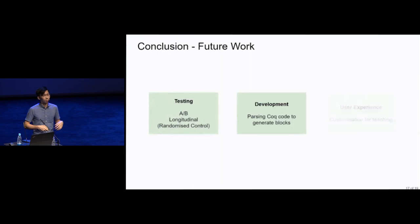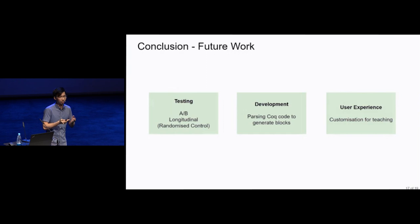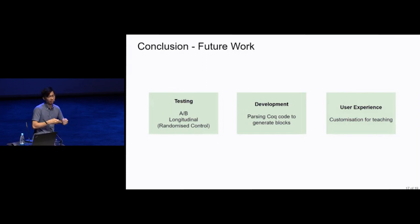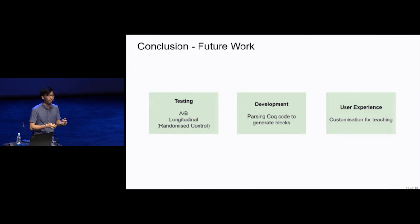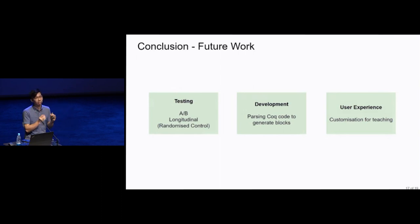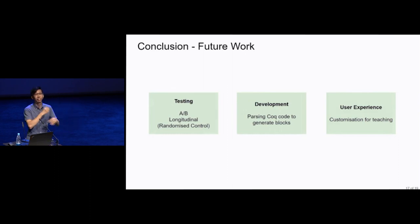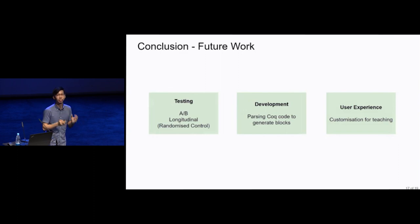For future work, the top priority is user testing — for example, following undergrad students taking a Coq class, or maybe as an A/B study. Additionally, further development via letting users write Coq code and then generating the blocks from that. Thirdly, improving the user experience, for example customizing for teaching. Imagine an instructor that teaches a Coq class and wants students to only use three specific tactics — they can customize that in the editor, and then students are constrained to only use those three tactics.